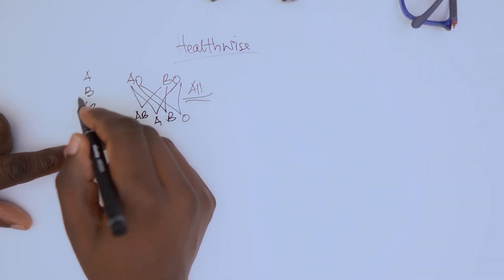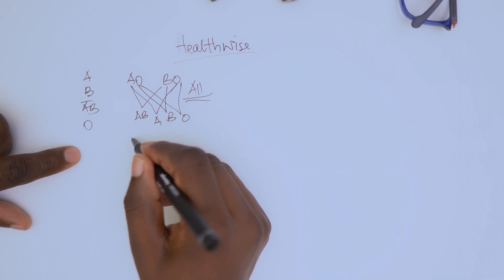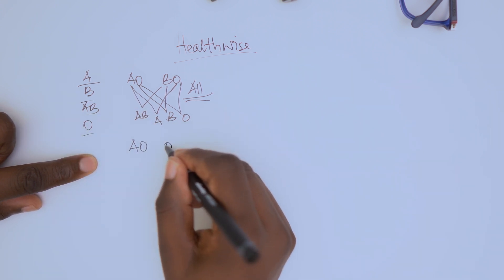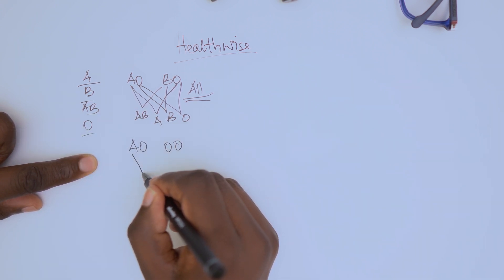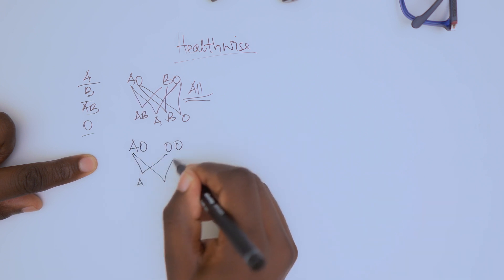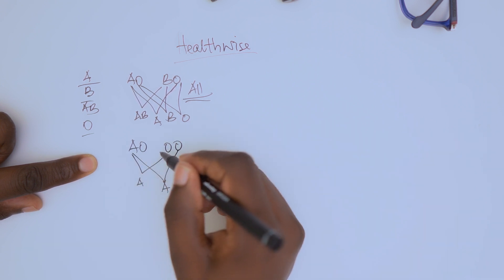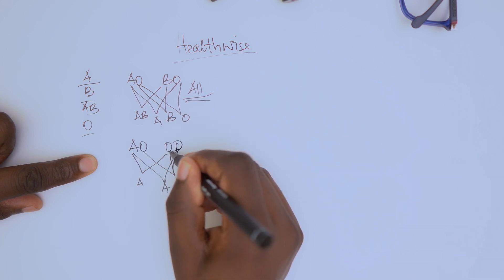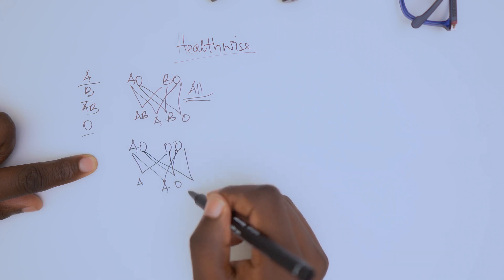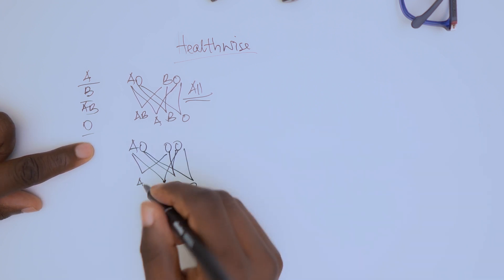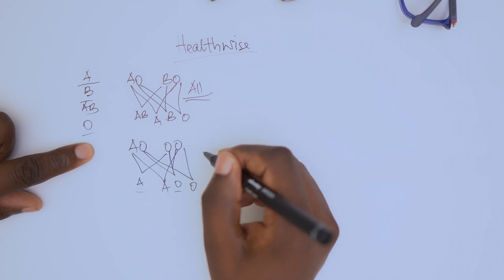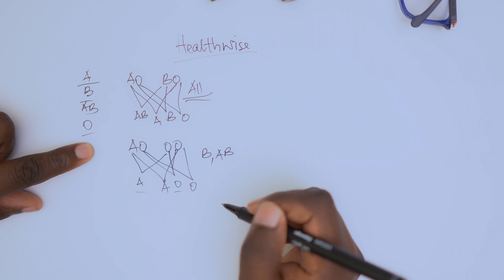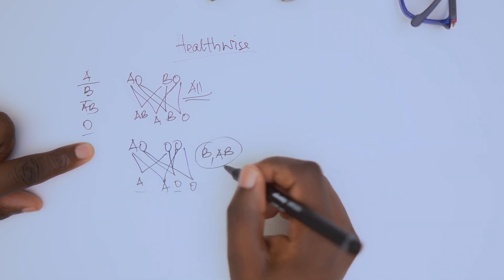Let's go to the next scenario. If one partner is A with genotype AO and the other partner is O, you're going to get A and O only. So in that family, you cannot find B or AB — those cannot be found.